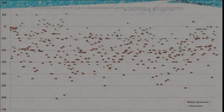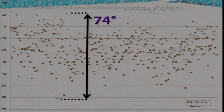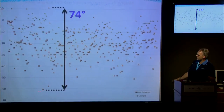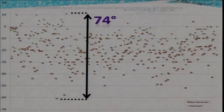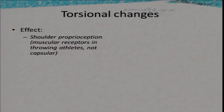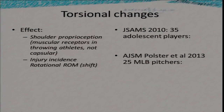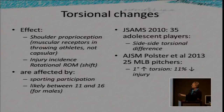Humeral torsion varies markedly between subjects. In the first 200 we measured, values ranged from 12 degrees of external rotation to 62 degrees of internal rotation, so average values in this regard become meaningless. The biggest within-subject variance we've seen is about 45 degrees. Torsional changes affect proprioception, which makes us think injury may be more related to muscular receptors than capsular receptors in these throwing athletes, and torsion also changes injury incidence.